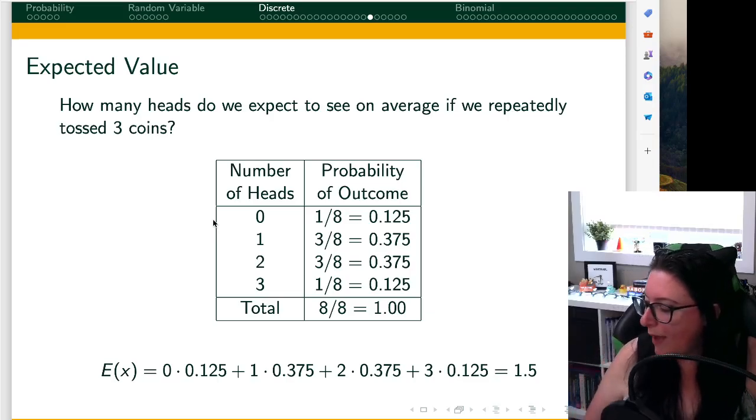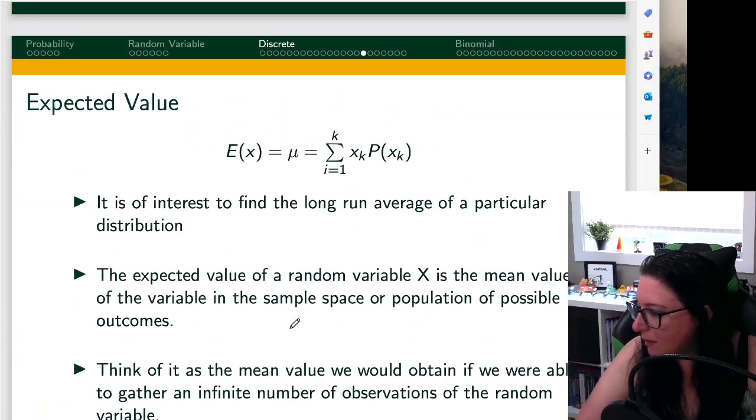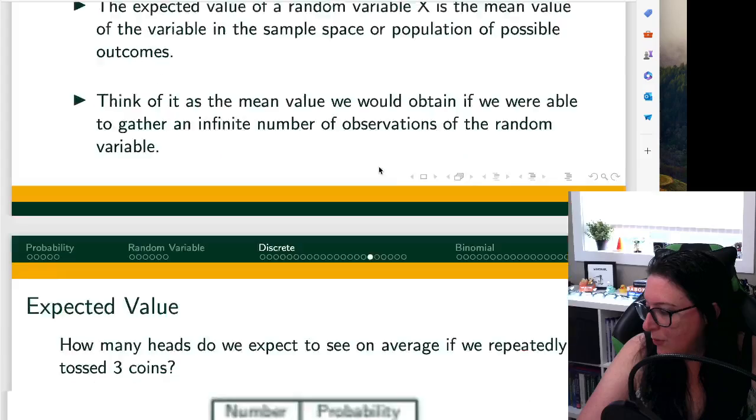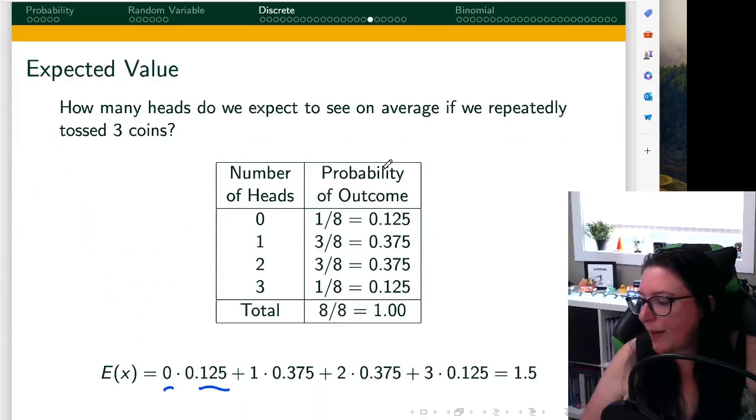what we do is we take the number of heads, so first being zero, times the probability of that outcome. The formula is x times the probability of x. So x here being x equals zero, and the probability of x equals zero is 0.125.